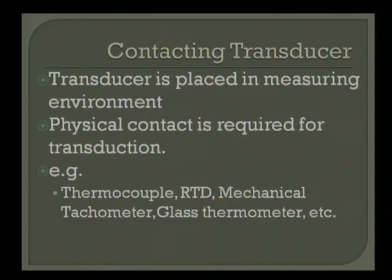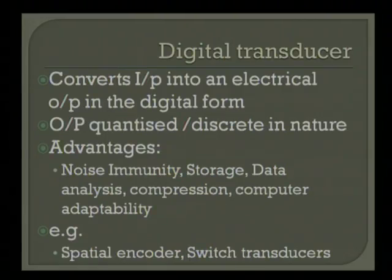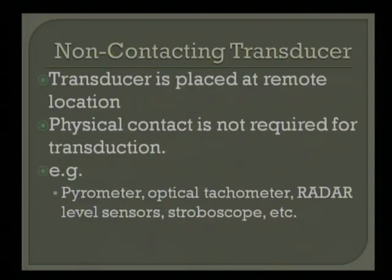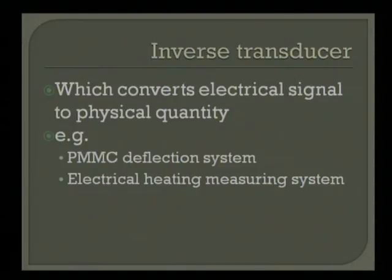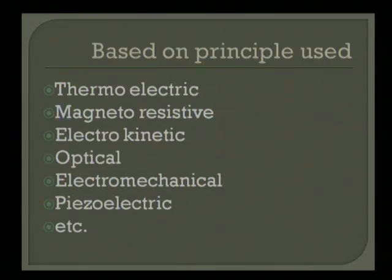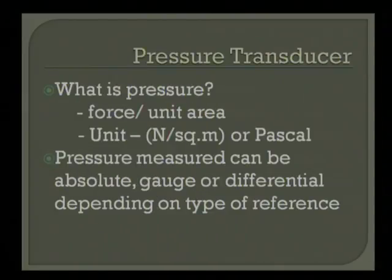Other classification categories include contacting or non-contacting type of transducers, analog and digital transducers, inverse transducers, and classification on the basis of the principle being used. So this is how one can classify different kinds of transducers.